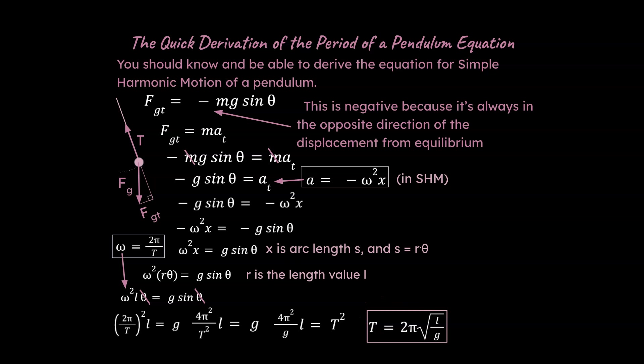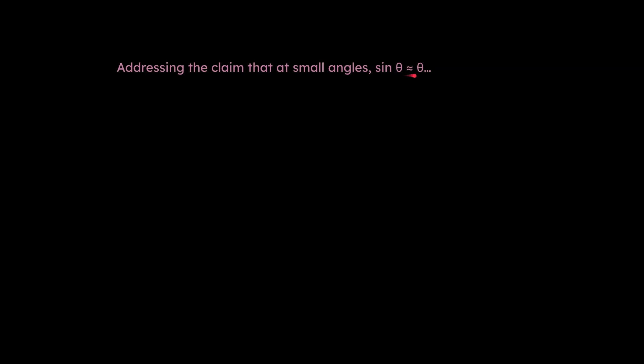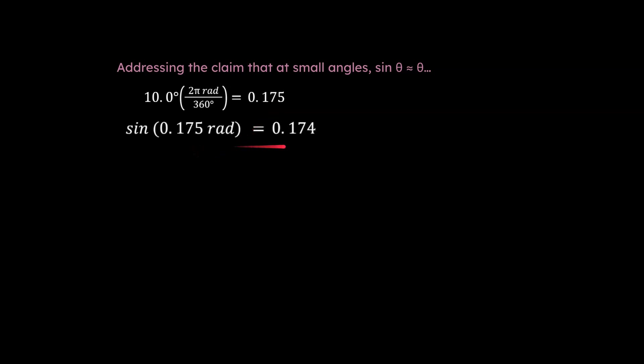I made the claim that at small angles, the sine of an angle in radians is basically the same as that angle — let me show you. Take 10 degrees: that equals 0.175 radians. The sine of 10 degrees equals 0.174. Notice that 0.175 is approximately equal to 0.174 — this assumption is actually pretty solid. Even up to 10 or 15 degrees, there's a very small difference between the two values. It really only becomes more significant above about 30 degrees.